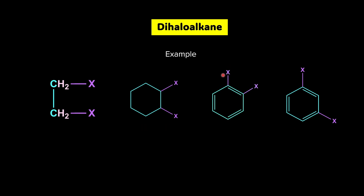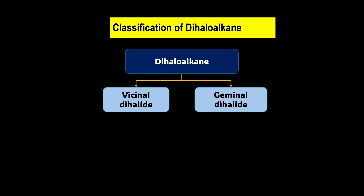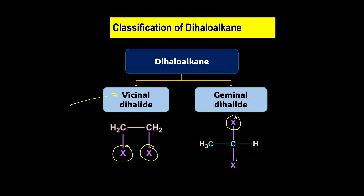Here we have benzene rings with two halogens at positions 1 and 2, and here at positions 1 and 3. Now, it is quite interesting to observe that the first three examples have the two halogens on adjacent carbons, but it may also be a possibility that the two halogens are present on the same carbon. Depending on this positioning, we can further classify dihaloalkanes as vicinal and geminal. We use the term vicinal dihalide when the two halogens are present on adjacent carbons — vicinal comes from the English word 'vicinity.' A geminal dihalide is when the two halogens are present on the same carbon.